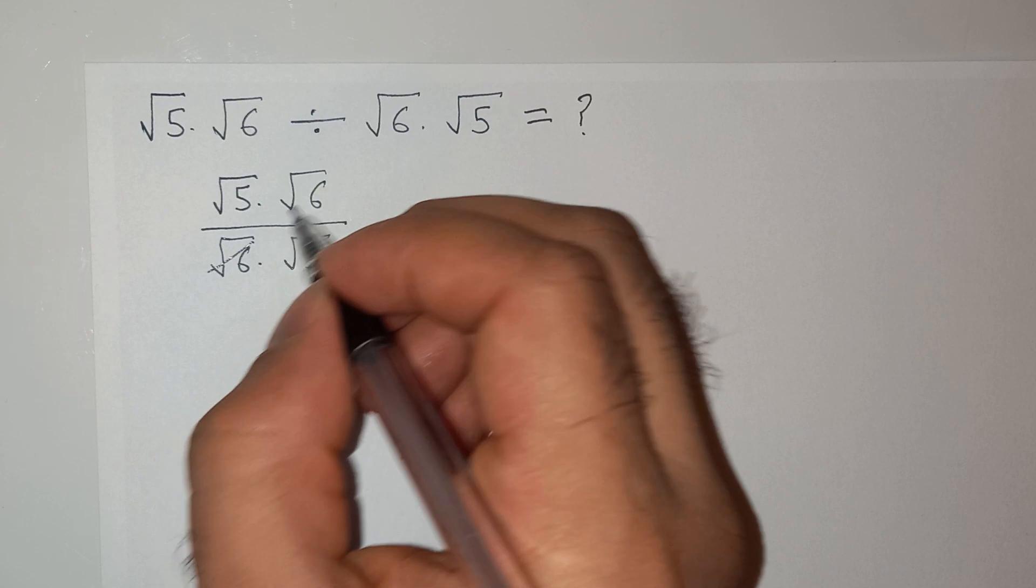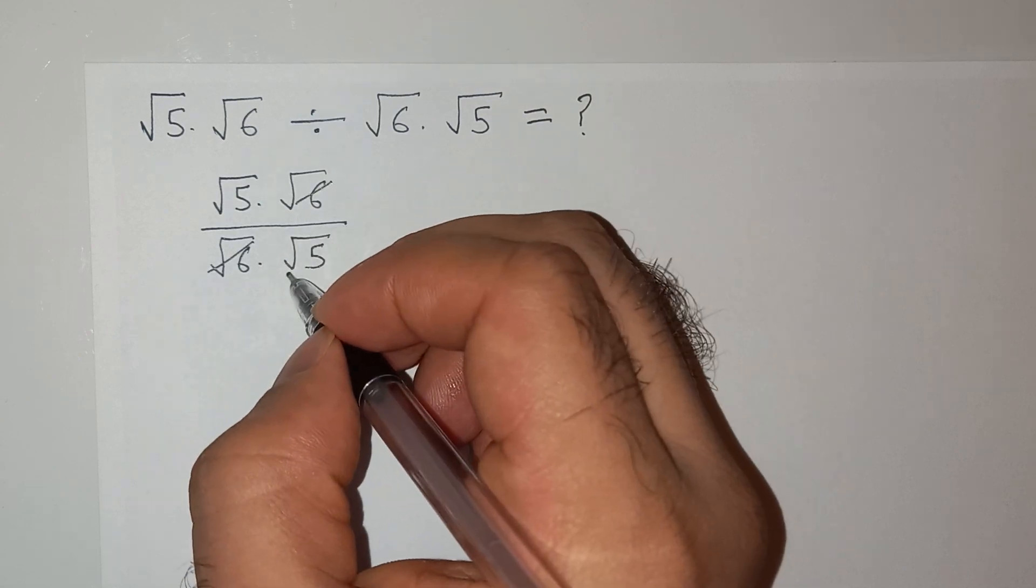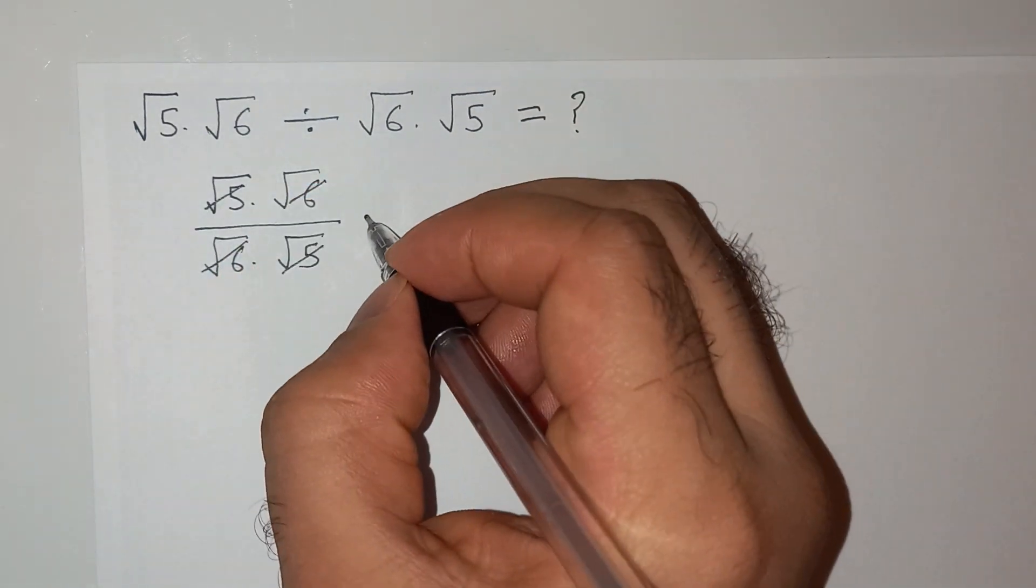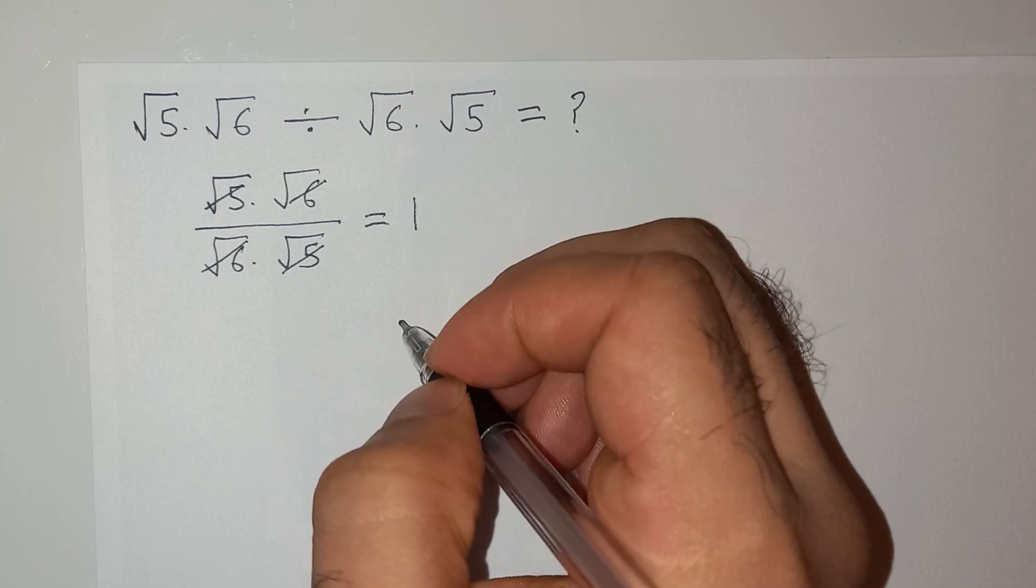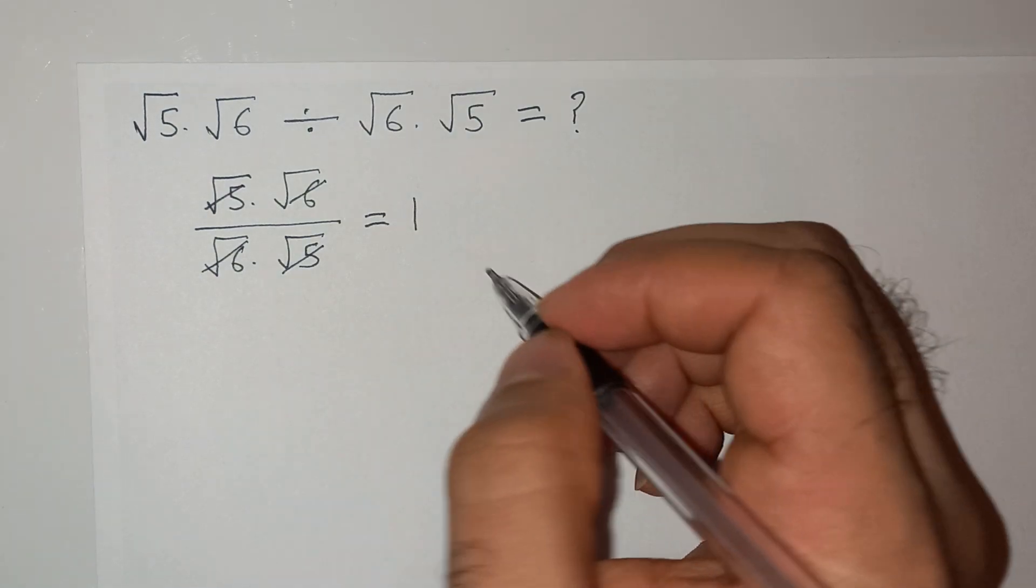Now you can cancel this √6 and √6, then this √5 and √5, and the answer is 1. But is it easy? Is it this simple?